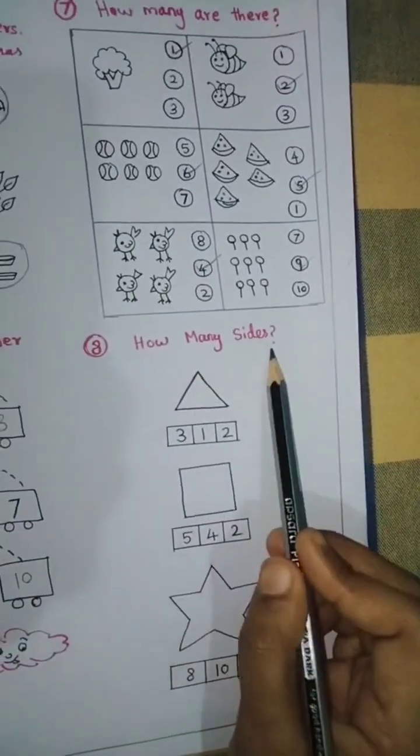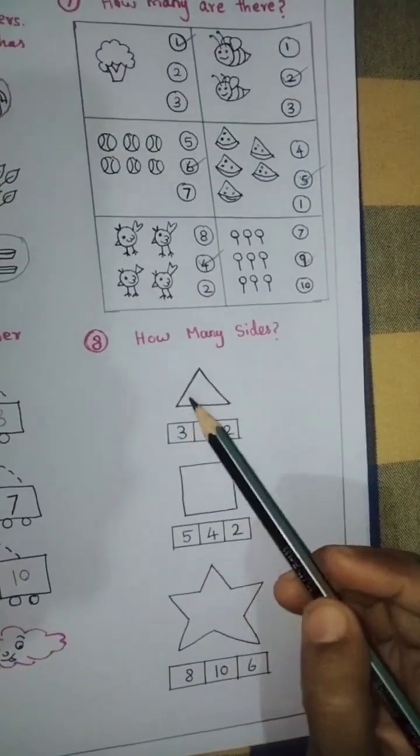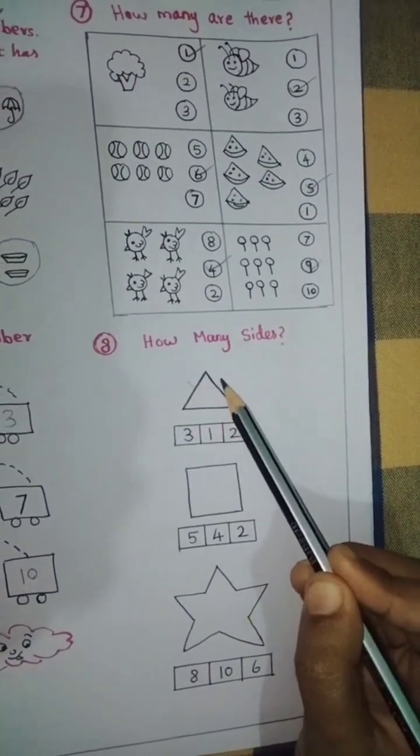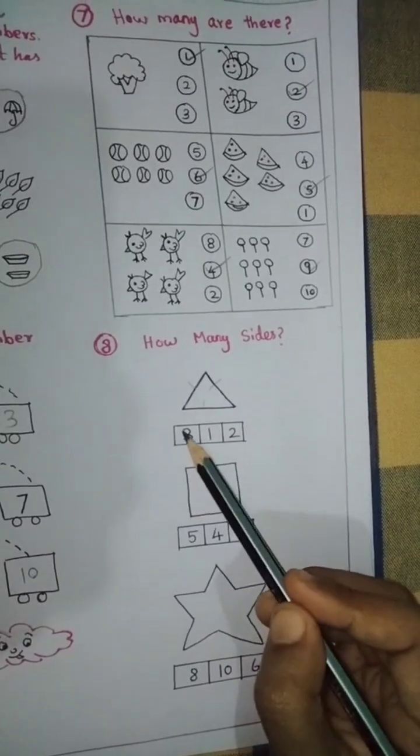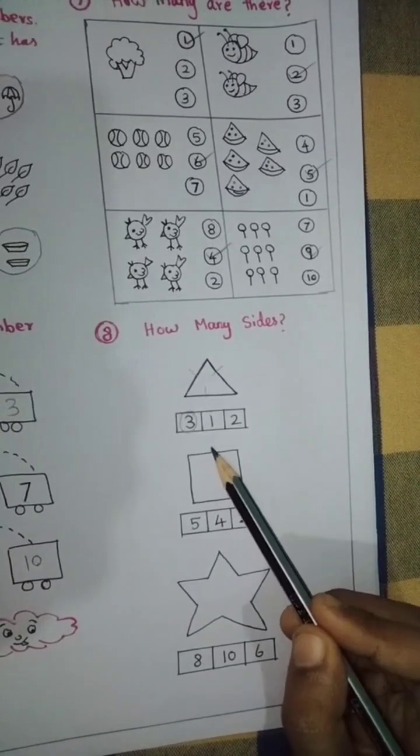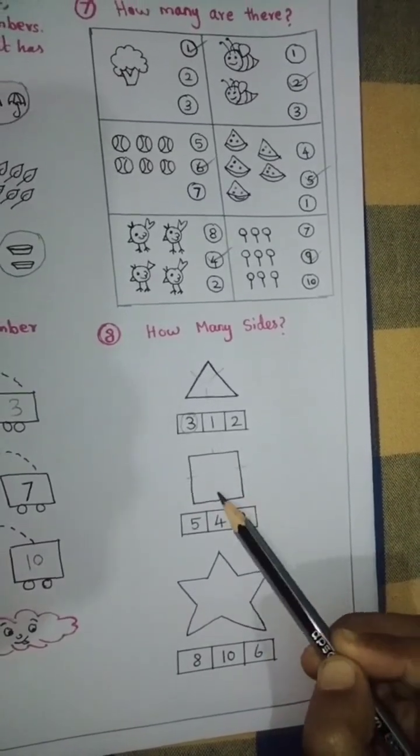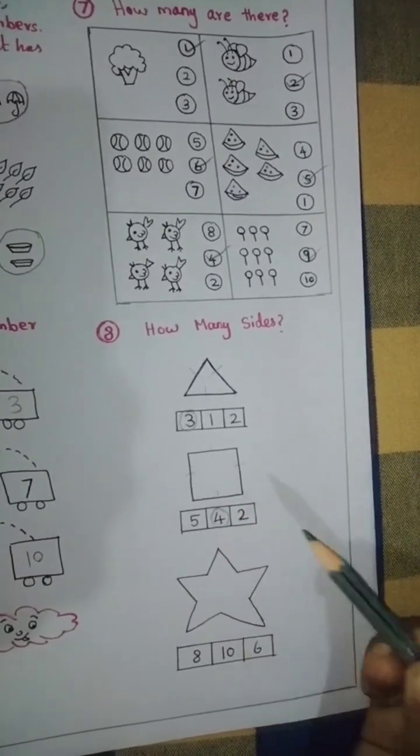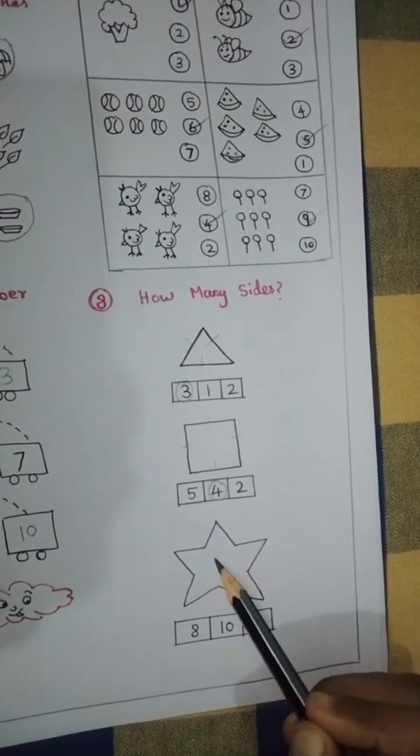8, how many sides? Triangle shape, count the sides. 1 side, 2 sides, 3 sides. Circle number 3. Next, square shape. 1 side, 2, 3, 4 sides. Circle number 4.